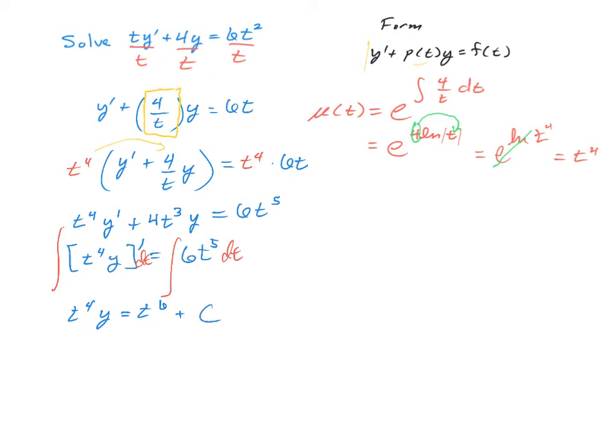And then our last step, of course, is to divide both sides to get the y by itself. So divide both sides by t to the 4th. And that gives us a y of t, which is equal to t squared plus c times t to the negative 4th power. And that is the solution of this linear equation.